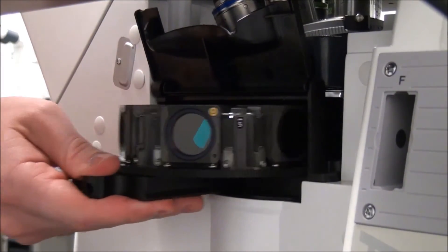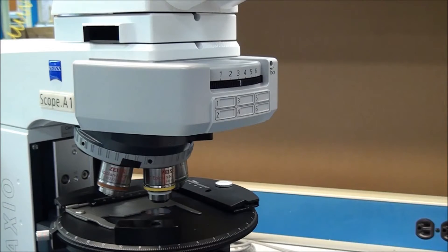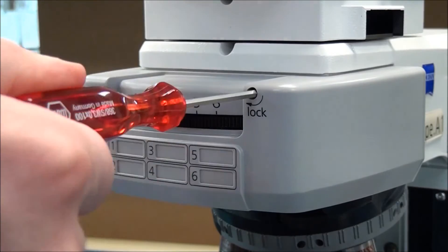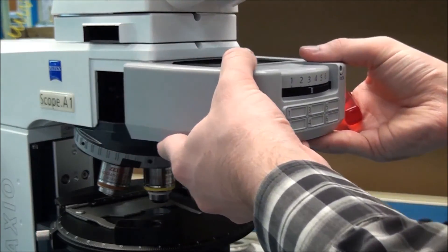Slide the reflector changer completely out. On Axioscope A1, the reflector changer must be completely removed to access the reflector modules, except on the FL LED version. Remove the module by loosening a 3mm hex Allen screw as shown.